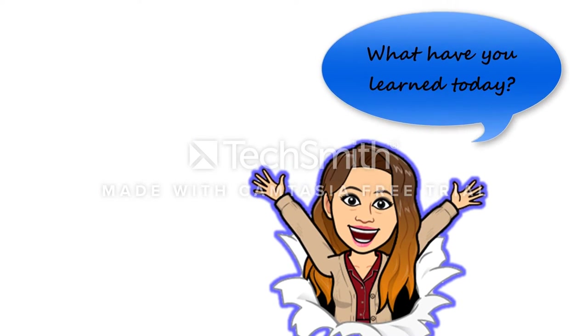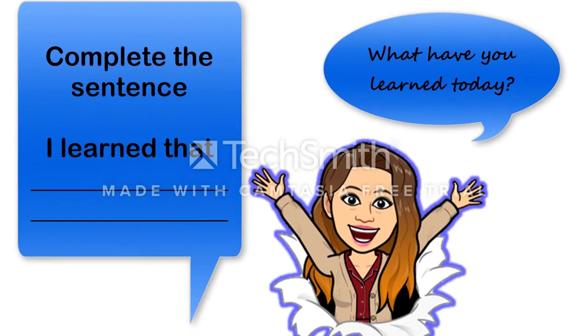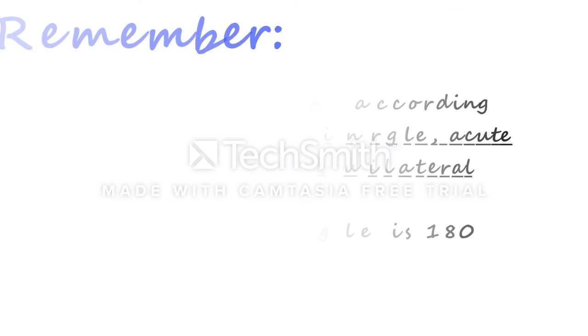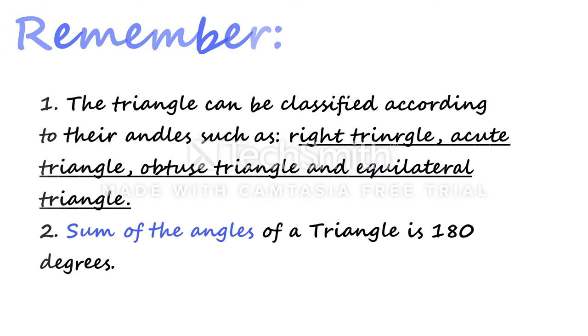What have you learned today? Remember, number one, the triangle can be classified according to their angles, such as right triangle, acute triangle, obtuse triangle, and equilateral triangle. Number two, the sum of the angles of the triangle is equal to 180 degrees.